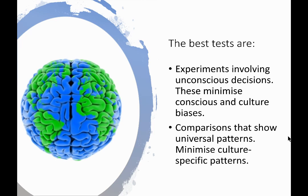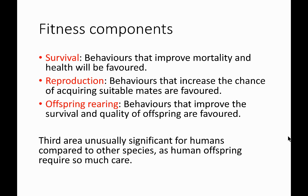There are three components to fitness. Survival: behaviours that improve mortality and health we would expect to be favoured. Reproduction: behaviours that increase the chance of acquiring suitable mates will be favoured. Offspring rearing: behaviours that improve the survival and quality of the offspring will be favoured. This third area is unusually significant for humans compared to other species, as human offspring require so much care. We look after our offspring more than any other species, and so this has particularly heavy weight.